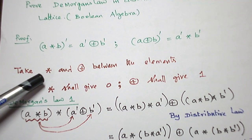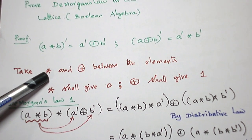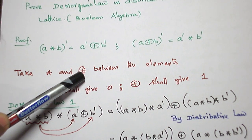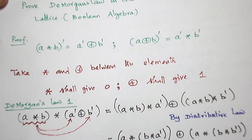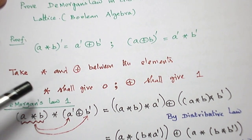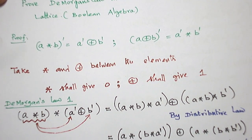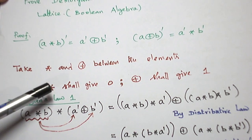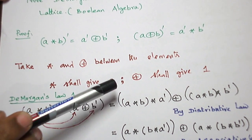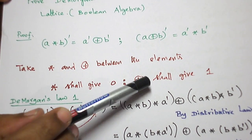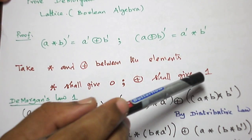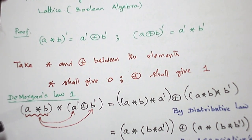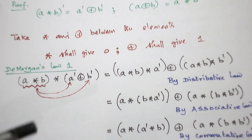Star is the meet operation and plus is the join operation between elements. Recall the definition of complement: when we take star between two elements and it gives 0, and when we take plus operation and they give 1, then they are called complements of each other. This is what we are going to use.